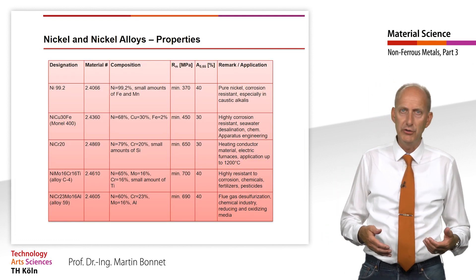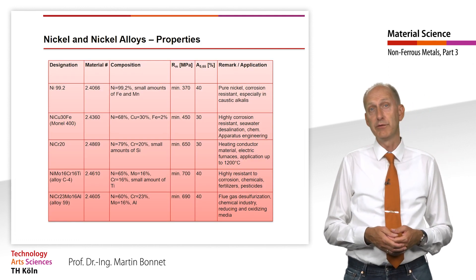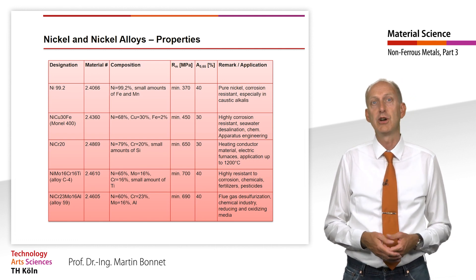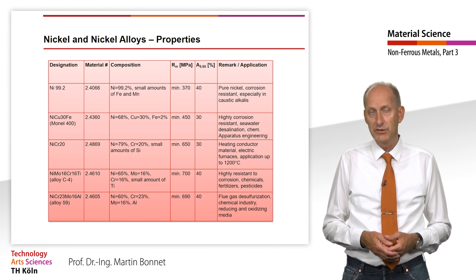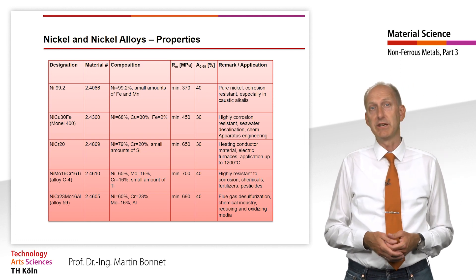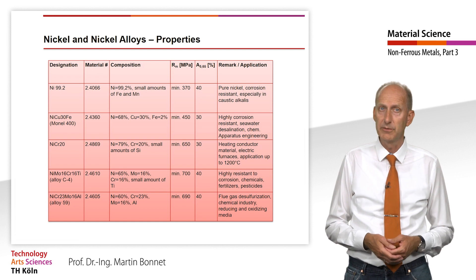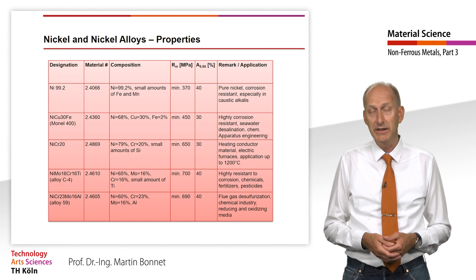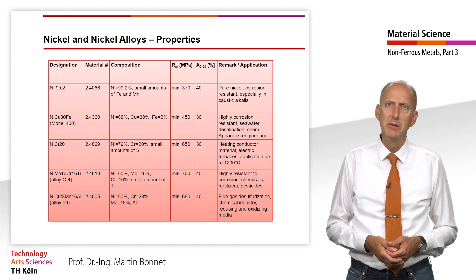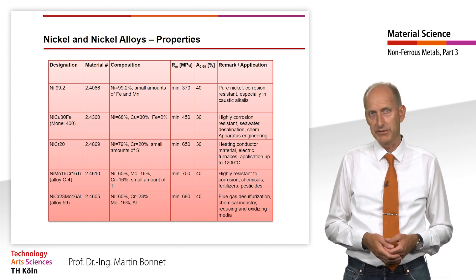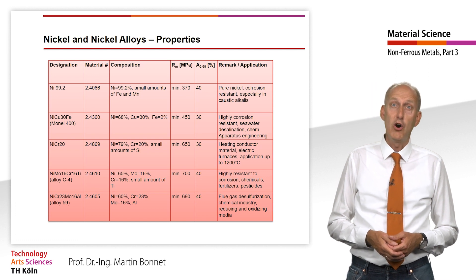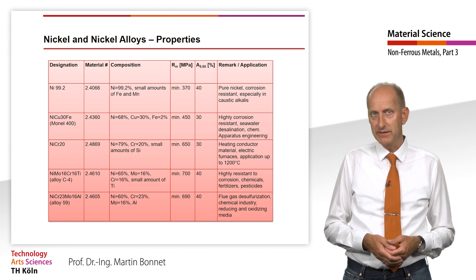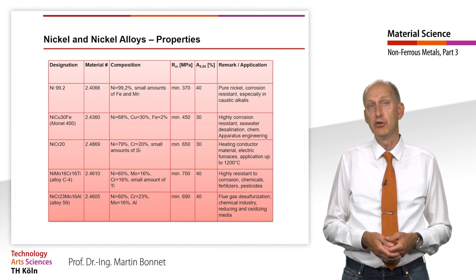Most of the nickel produced is used as an alloying element for steels, and only about 10–20% is used for the production of nickel materials. Nickel materials are generally quite corrosion resistant and are characterized in part by excellent mechanical properties. Strengths on a par with steel are combined with extremely high toughness due to the face-centered cubic lattice structure.